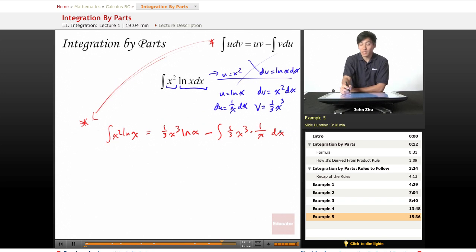So we have one third x cubed ln of x minus one third integral of x cubed over x is just x squared. So we have that x squared term now. We just apply the power rule to get the integral.